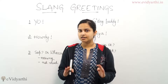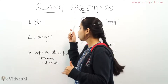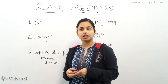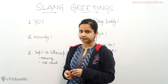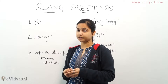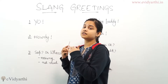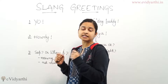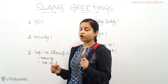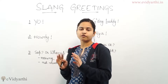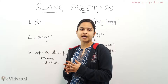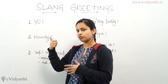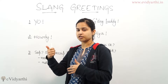So let's get started with the first one, which is 'Yo'. This slang is commonly used in America. It comes from 1990s hip hop slang, and nowadays it is generally used for a joking purpose. This 'Yo' slang is very popular among teenagers.